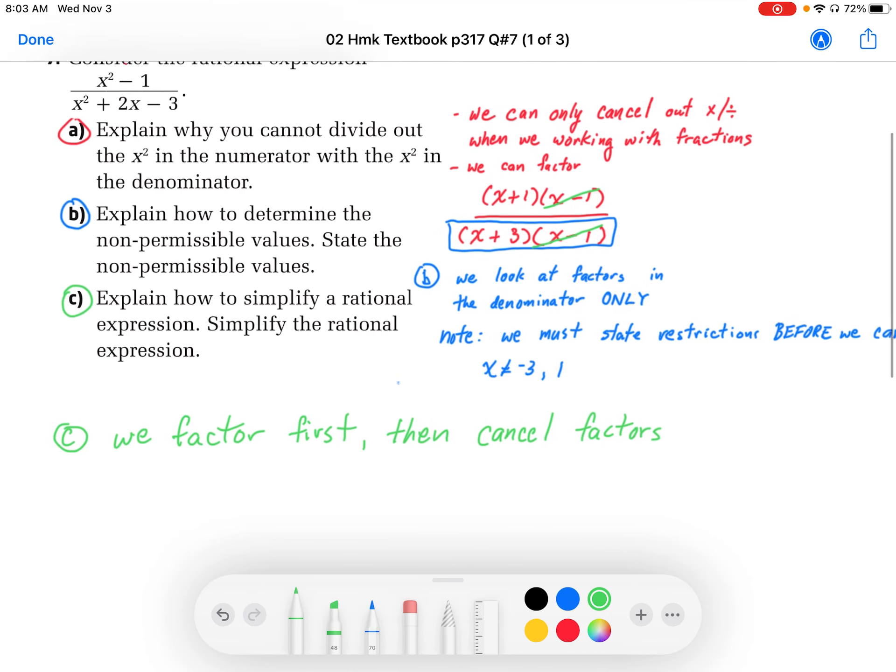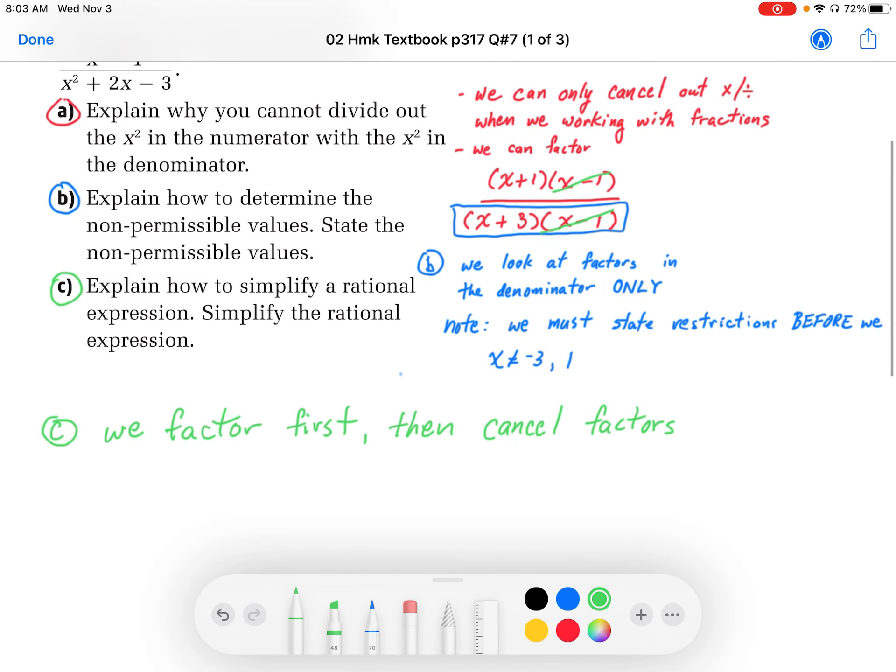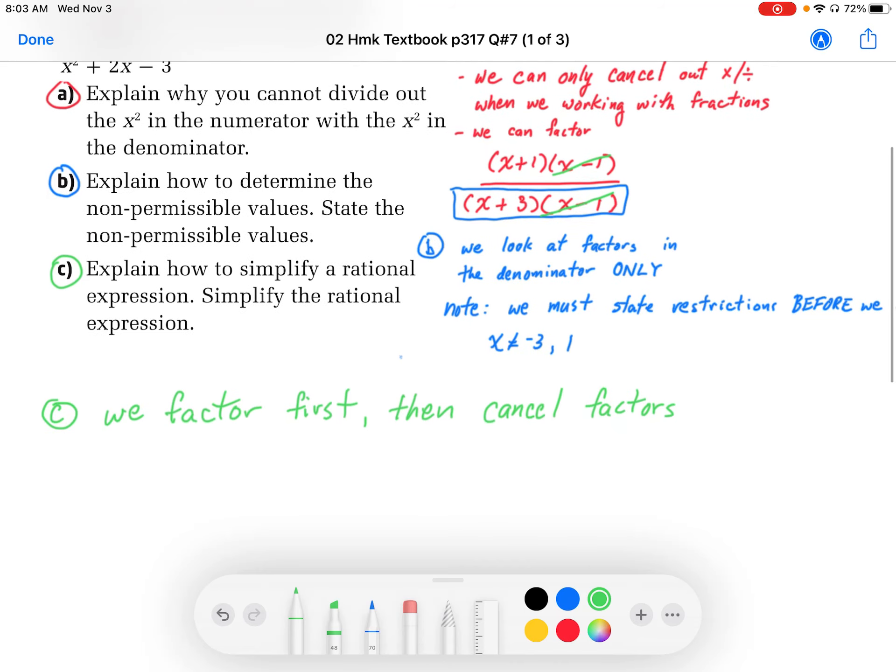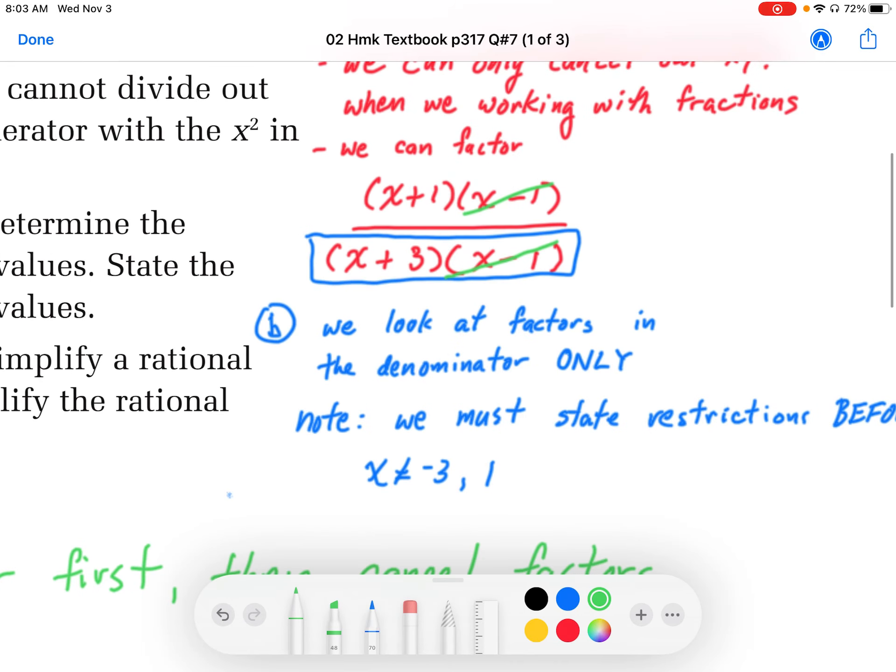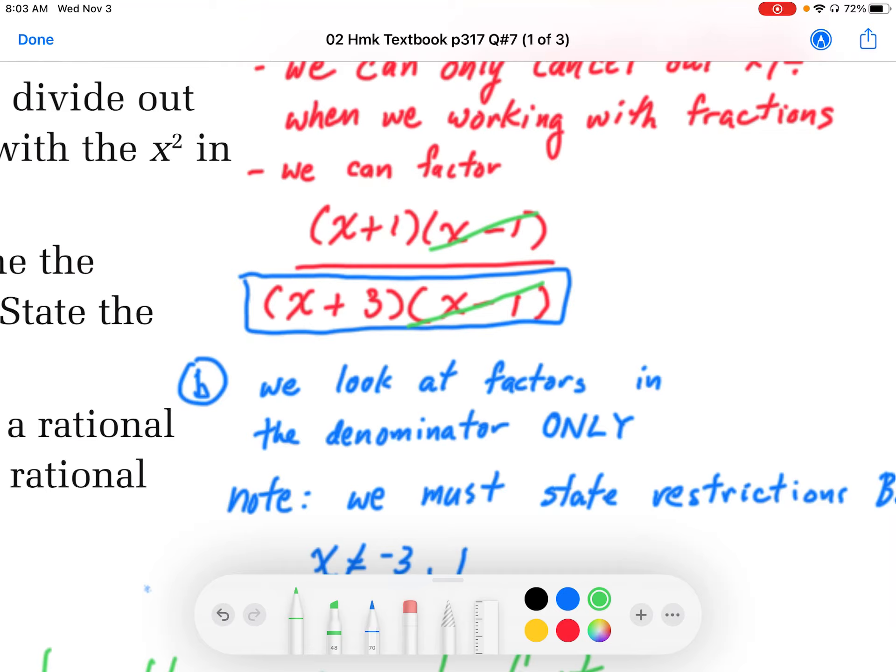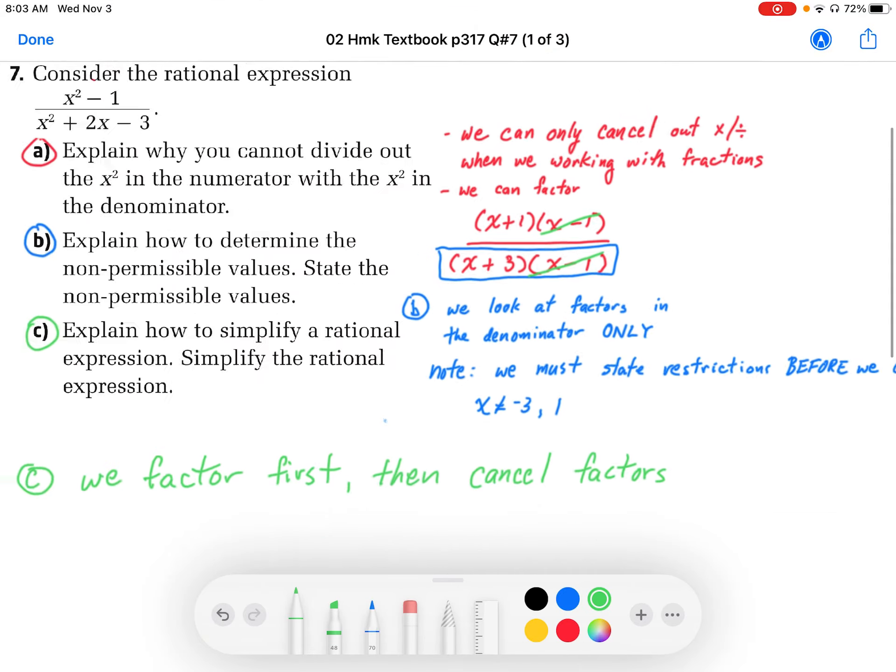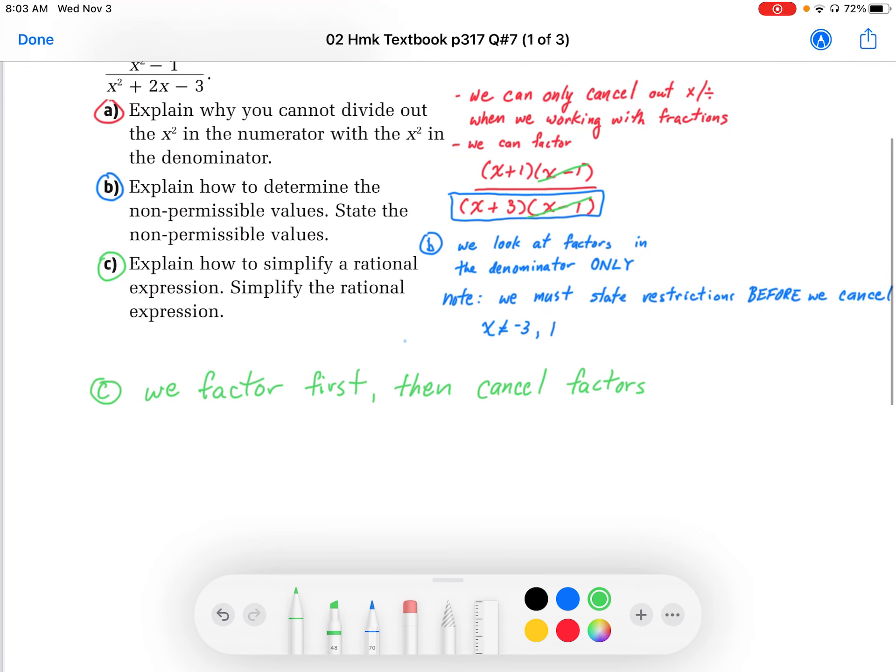So part c says, explain how to simplify rational expression and simplify the rational expression. So first thing we're going to do is we're going to factor. That's what we've done here. We're going to factor this all out. And then we cancel out the common factors. And we're left with, then, the simplified expression x plus 1 in the numerator and x plus 3 in the denominator.